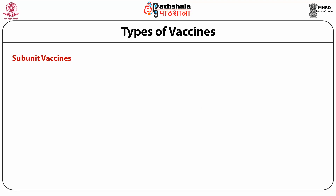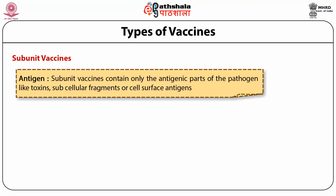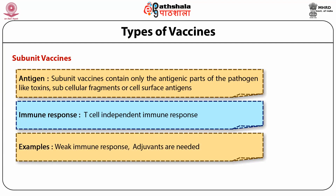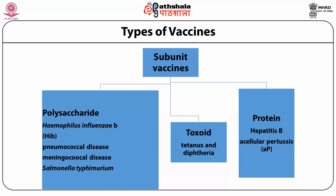Subunit vaccines contain some part of the pathogen with antigenic properties, such as toxins, subcellular fragments, or cell surface antigens. This type of vaccine does not induce T-cell immune response — only antibodies are induced, a B-cell mediated immune response that is relatively weak. Therefore adjuvants need to be added. Subunit vaccines are of three types based on the part used as antigen: polysaccharide, toxoid, and protein.